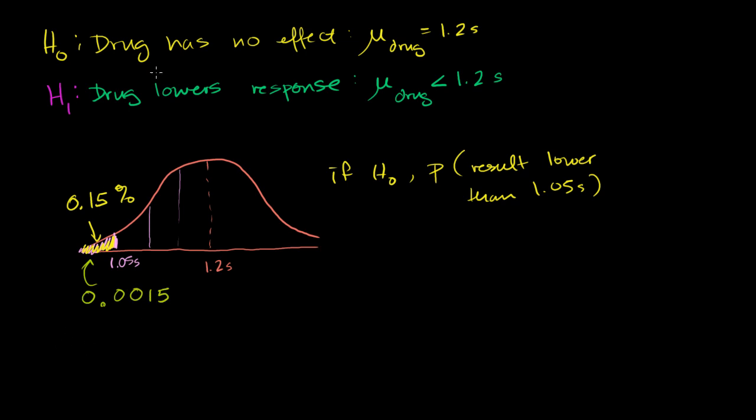So once again, if you set up your hypotheses like this, you would have only been a 0.15% chance of getting a result lower than the result we got. So that would be very unlikely. So we will reject the null hypothesis and go with the alternative. And in this situation, your p-value is going to be the 0.0015.